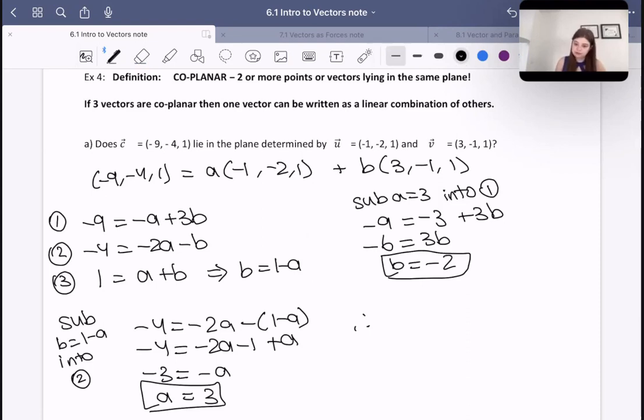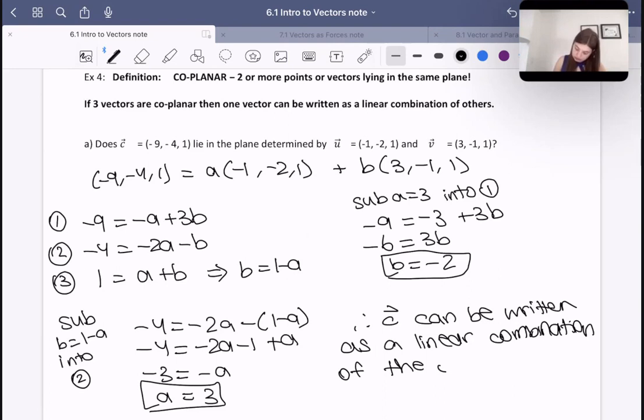And so therefore, we should say that C, vector C, can be written as a linear combination. So therefore, C, U, and V, not A, B, and C. A and B are just the variables we used in order to figure out what our linear combination was, right? The actual vectors are U and V, so it's C, U, and V are coplanar.